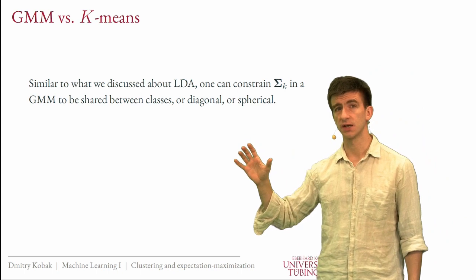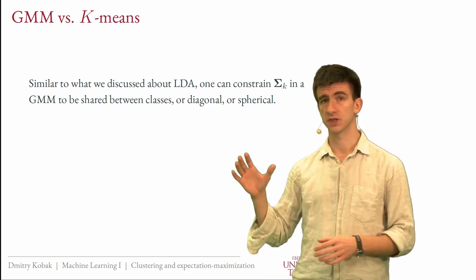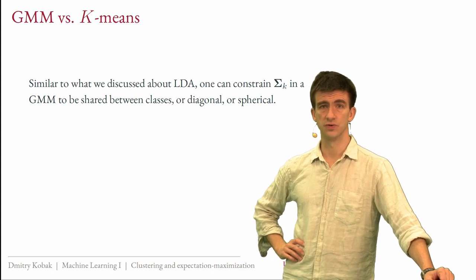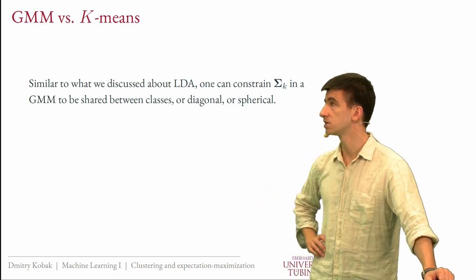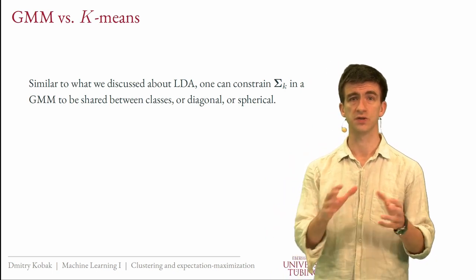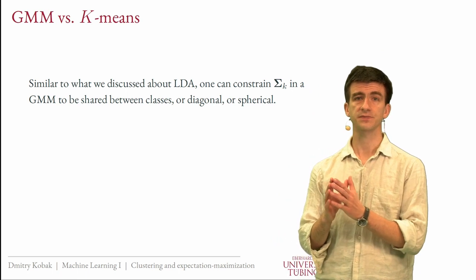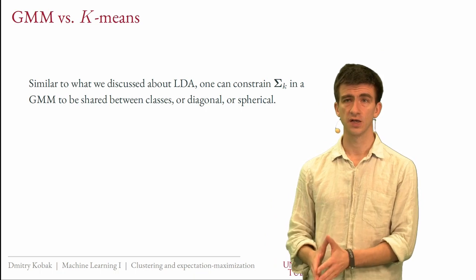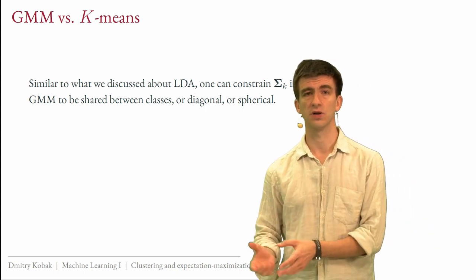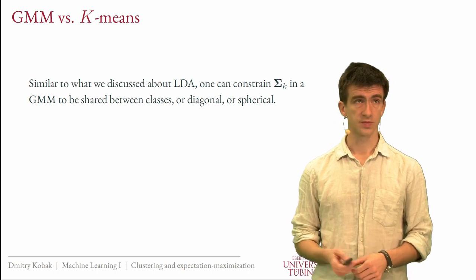GMM can also converge to a bad local minimum. If you start the Gaussian mixture model on a dataset with many clusters in 2D, it can converge to a suboptimal solution similarly to k-means, so all the heuristics I briefly mentioned — split-and-merge of clusters, smarter initialization — apply to Gaussian mixture models as well. In fact, GMM typically converges slower than k-means, so what is often done is that you run k-means first, get the k-means solution, and then initialize the Gaussian mixture model with that k-means solution.